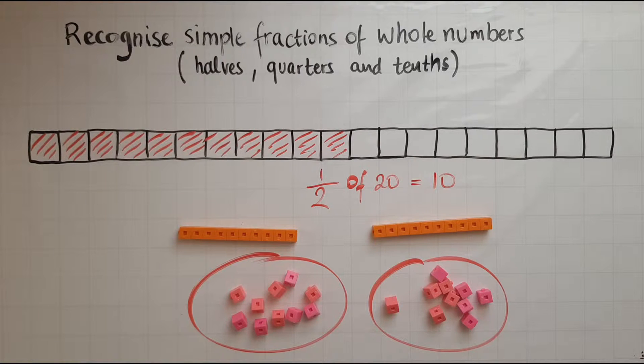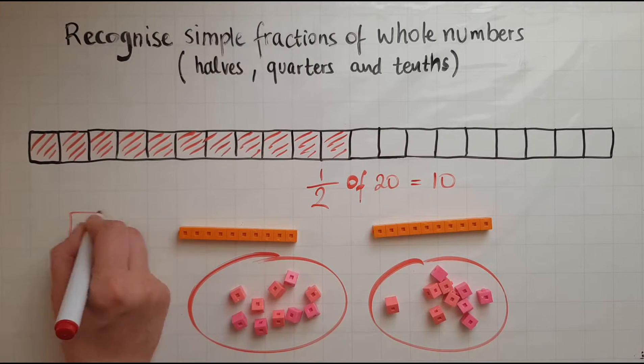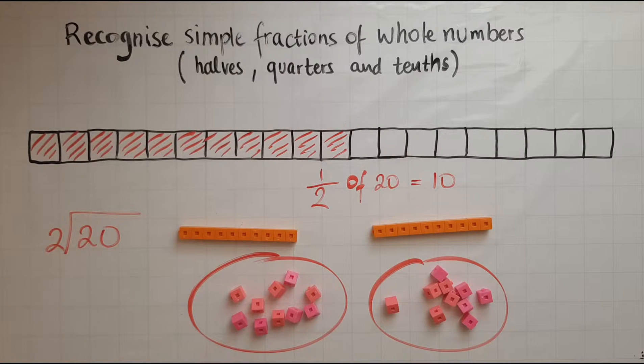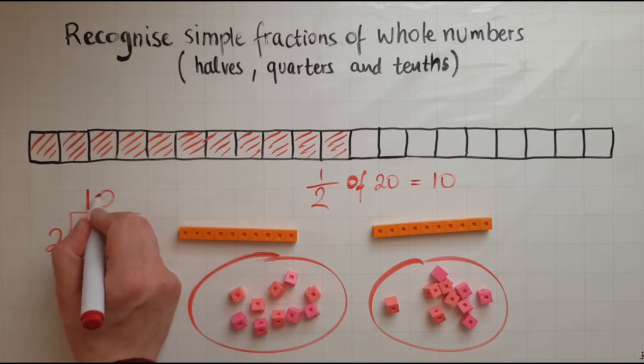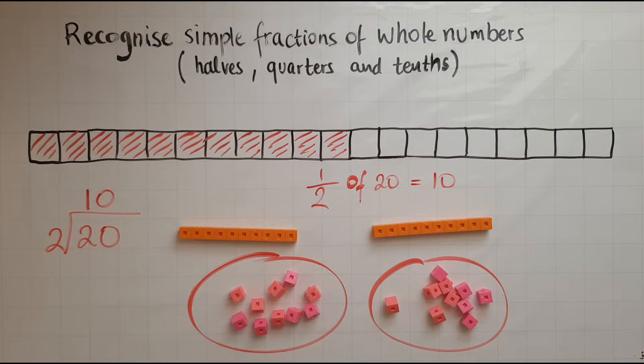And another way to do this would be 20 divided by 2. So how many twos would fit into 20? There is 1. How many twos into 0? There is 0. So my answer would be 10. So this would be the shortest way then once you are familiar with all of this.